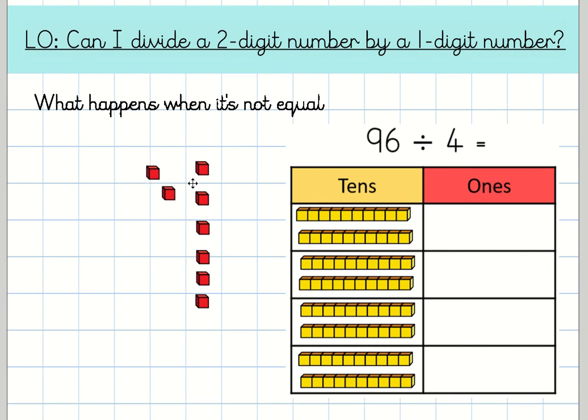Hopefully you've remembered that what you're going to do is exchange it, and you're going to exchange 1 ten for 10 ones. 1, 2, 3, 4, 5, 6, 7, 8, 9, 10. And now we've got 1, 2, 3, 4, 5, 6, 7, 8, 9, 10, 11, 12, 13, 14, 15, 16 ones. Now if we think about the four times tables, is 16 a multiple of 4? Yes it is, which should mean that we can equally divide 16 by 4.